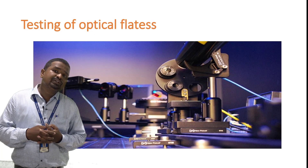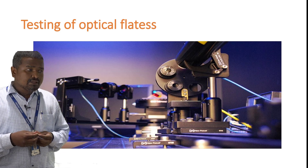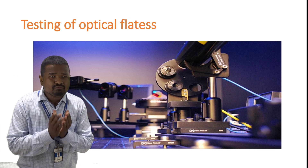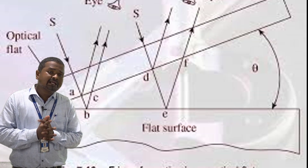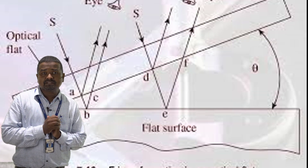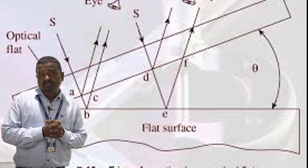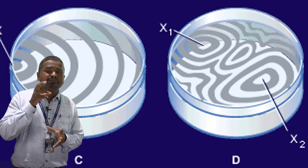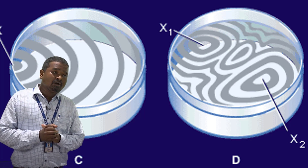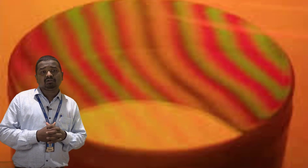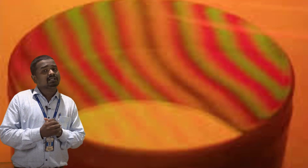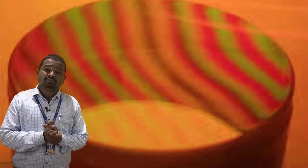The second application is testing the optical flatness of objects. In many situations, we need a completely optically flat surface. This is checked by placing an optically flat surface at a particular angle with the test piece, forming a wedge-shaped film, which produces fringes. If the fringes are equidistant and parallel to each other, the test piece is optically flat. If the fringes are disturbed, not straight, or curved, the test piece is not optically flat. These are some important applications of interference. Thank you so much.